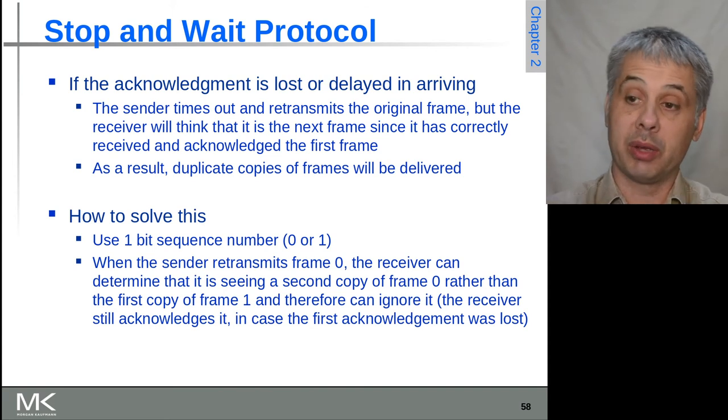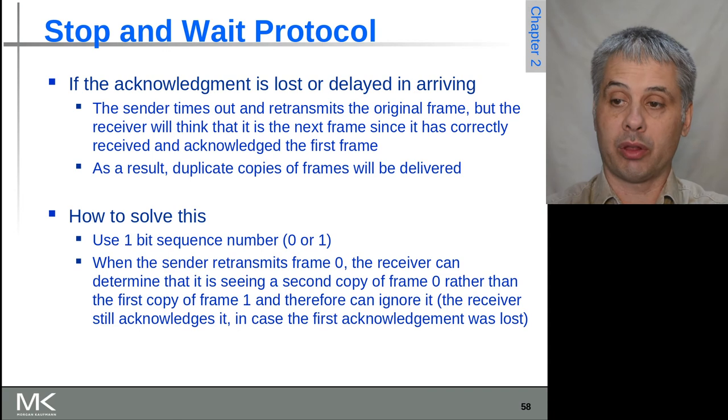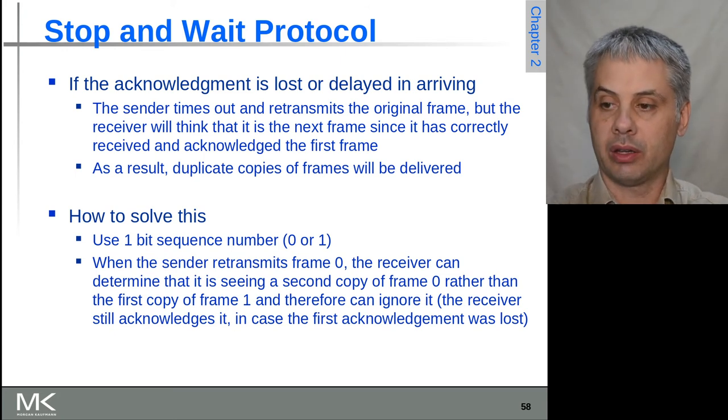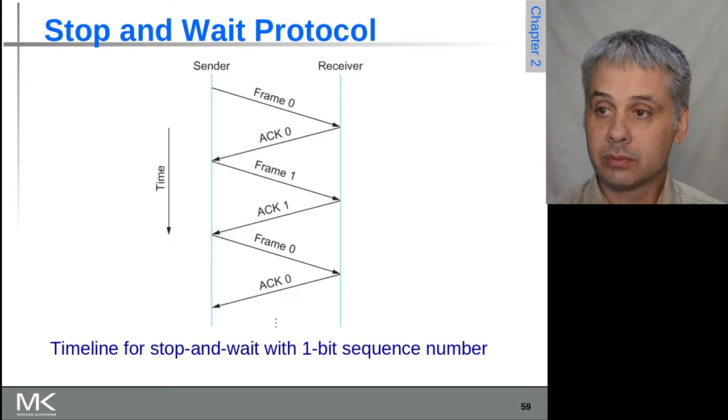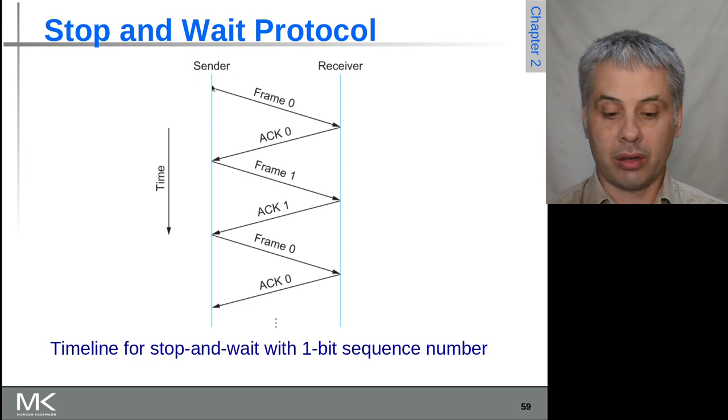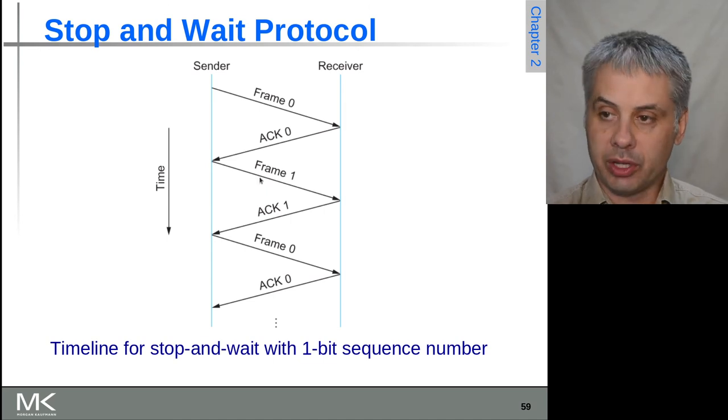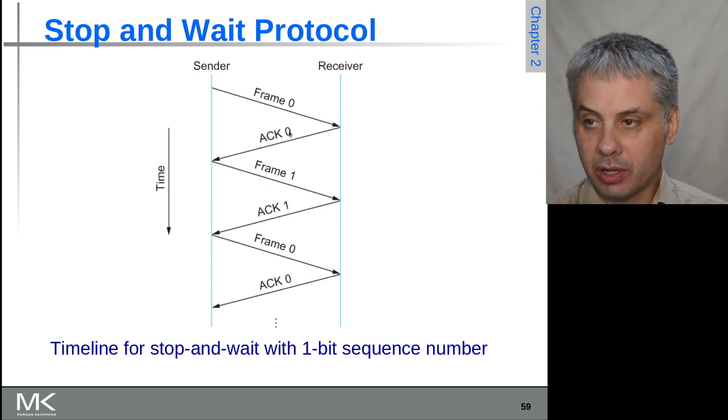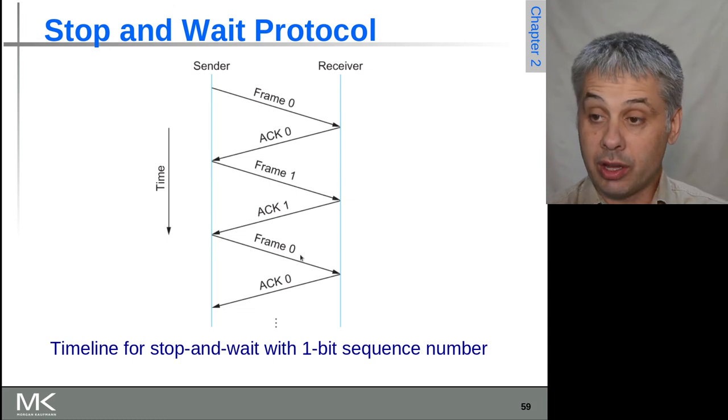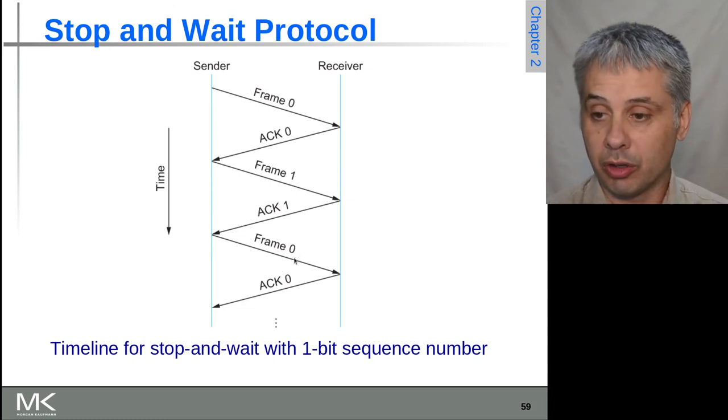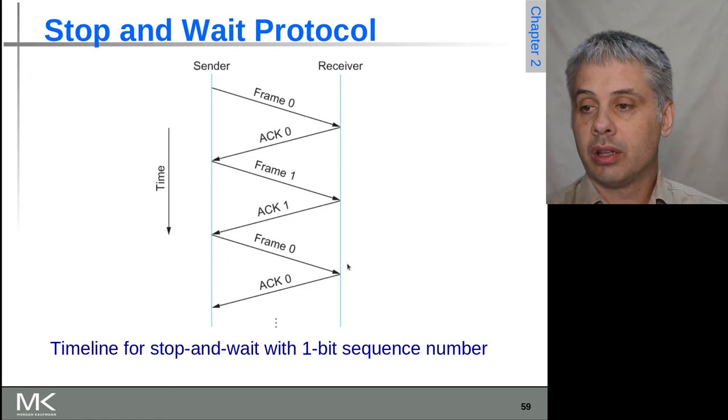When the sender retransmits frame zero, the receiver knows whether it's still the same frame or whether it's now moved on to the next frame. If we look at that again as a network timing diagram, the sender sends frame zero to the receiver. The receiver receives it and sends an ACK to frame zero, after which the sender will send frame one. This will get acknowledged and then it will send frame zero again because there's only one bit. There's only two possible values, so this can be a solution.